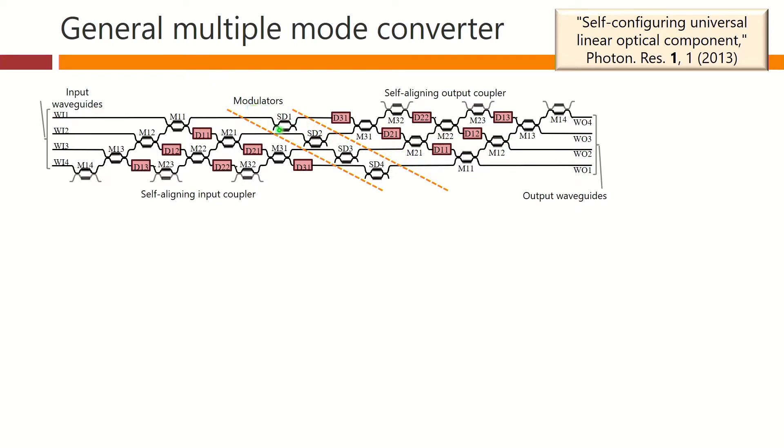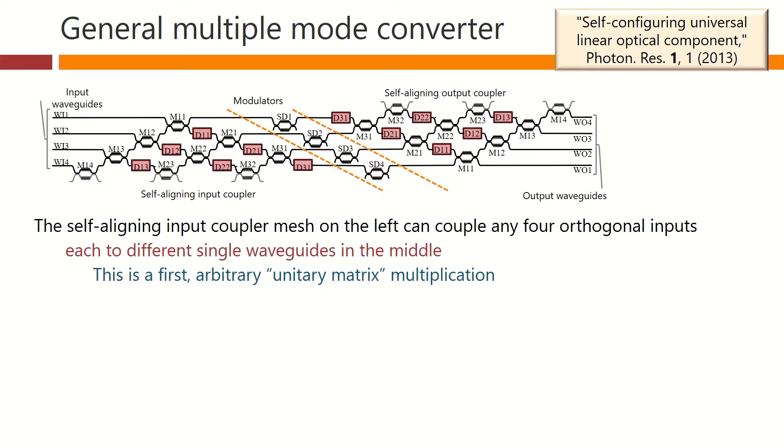And we've also added a set of modulators in the middle that can modulate amplitude and phase on these waveguides as they go through. So, the self-aligning input coupler mesh on the left can couple any four orthogonal inputs, each to different signal waveguides in the middle, to these waveguides in here. This is a first arbitrary unitary matrix multiplication.